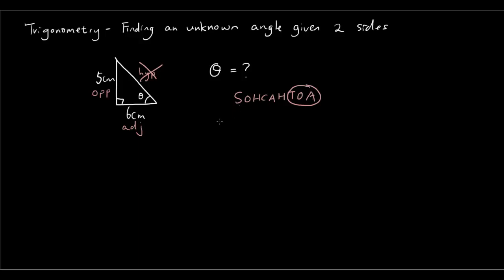So we are going to write out the tangent equation, tan θ equals opposite over adjacent. And then what we are going to do is substitute the numbers that we have, which are 5 and 6 into our two variables. So tangent θ equals 5 over 6.